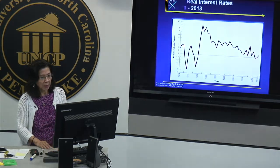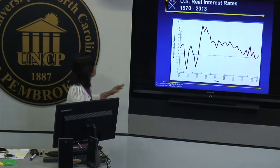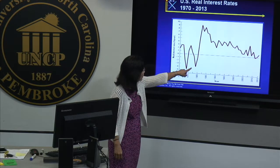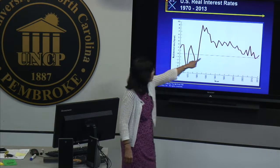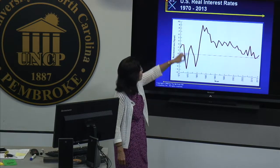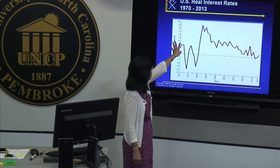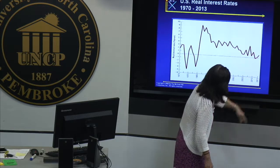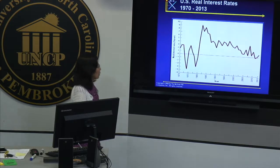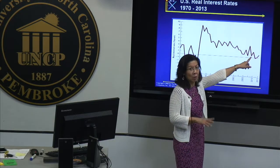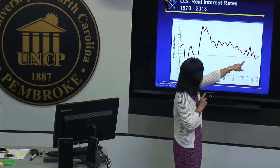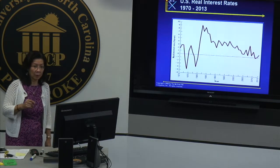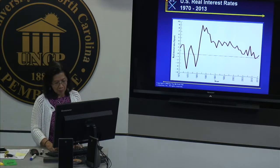Now we translate that table into a graph. You can see those two years — around 1975 and 1980 — where the real interest rate dips below zero. The rest of the time the real interest rate is positive. Around 2010-2011 we had near-deflation, negative inflation, and you can see the real interest rate dropped close to zero and then went negative.